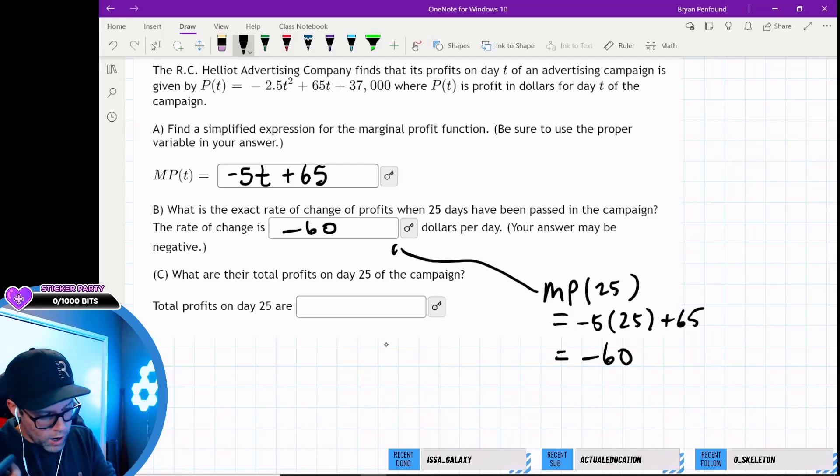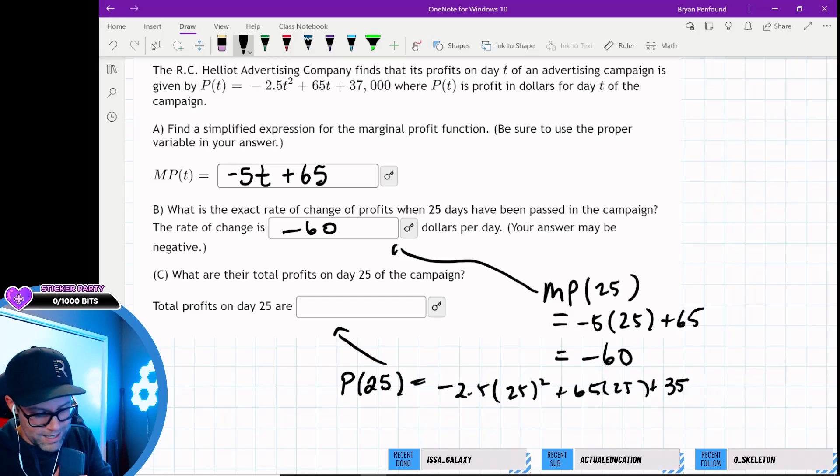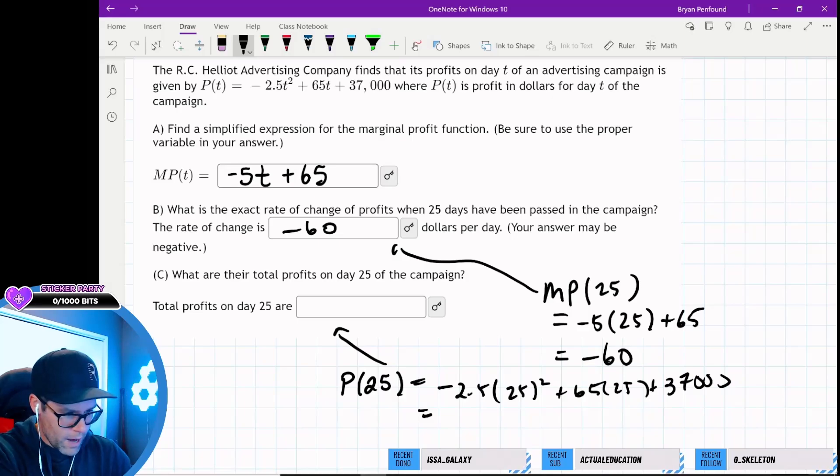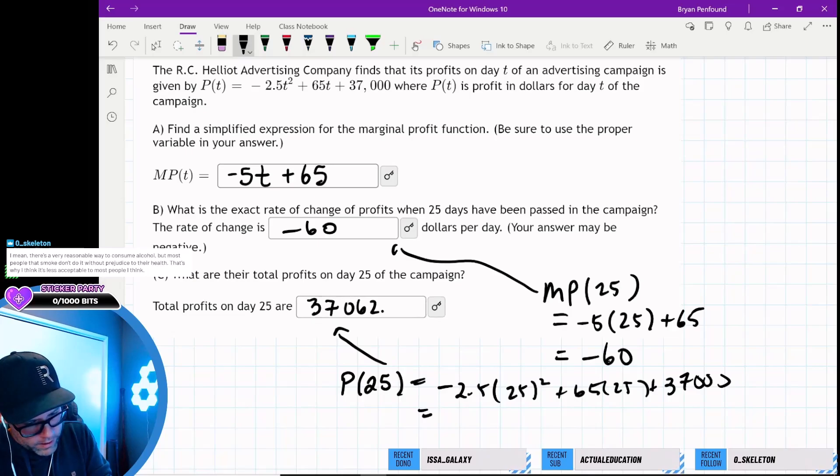And then their total profits, though, are given by the profit function. So this is going to be the profit function evaluated at 25, which is a little bit more complicated. This is our negative 2.5 times 25 squared plus 65 times 25 plus 37,000. So it looks like we're at something like 37,062 dollars and 50 cents.